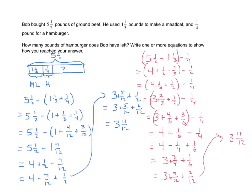So we've fulfilled it — we've got our equation. Make sure that you fulfill all the items in the task and show how you get your answer. And of course, you should make a statement saying that Bob has three and eleven-twelfths pounds of ground beef left.